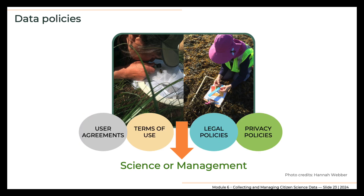Another topic regarding data is data policies. These include user agreements, terms of use, legal policies, and privacy policies — all of which are important to consider. User agreements are contracts between a project and a user that outline the acceptable behavior of both parties, covering both online and offline behavior. Terms of use dictate how a website and its contents can be used, and include information on data ownership, data access, data reuse, citation, and other forms of attribution. Legal policies describe how a project adheres to relevant national and local laws and also may include ethical guidelines.